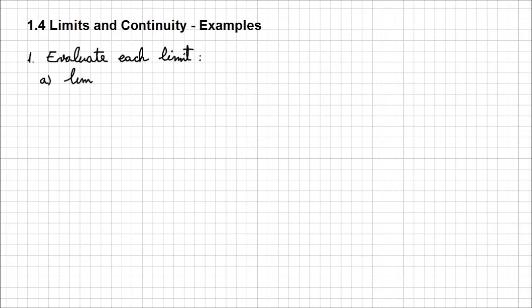Let's evaluate the limit when x approaches 2 from 7. What do you notice? 7 is a constant. There is no variable in this expression, so x can approach any value. The limit of this number 7 is going to be 7, obviously, and we know that based on the property of the limits.